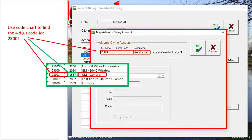First, we need to know the four-digit code for 23001. This little green box shows you a section of the code chart, and in green you see that the four-digit code for 23001 is 1567.